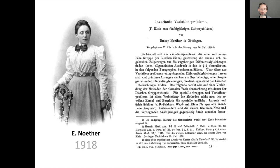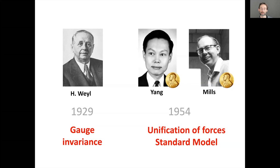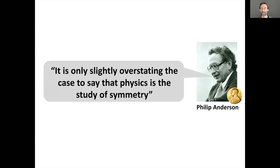For the first time there was a mathematical way of deriving conservation laws from first principles of symmetry — like conservation of energy from symmetry of time. These ideas had a profound impact in physics. Hermann Weyl introduced gauge invariance, generalized by Yang and Mills to unify different forces, culminating in the Standard Model introduced in 1975. As Philip Anderson put it, it's only slightly overstating to say that physics is the study of symmetry.